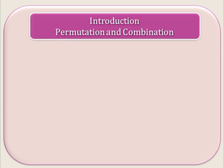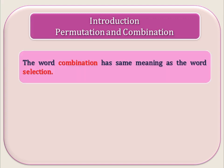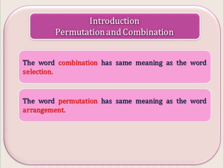First we see what is permutation and combination. Combination means selections — we select some objects out of certain objects. Permutation means arrangement — out of some objects we arrange those objects. So combination means selection and permutation means arrangement.